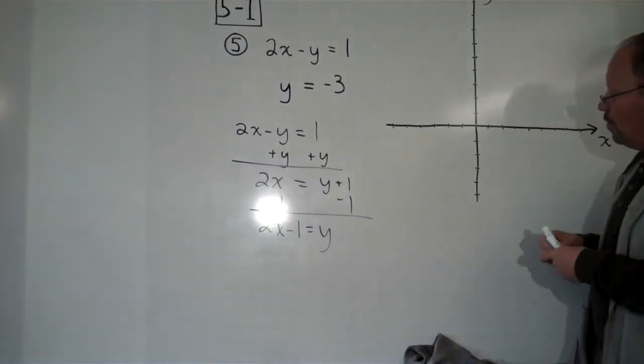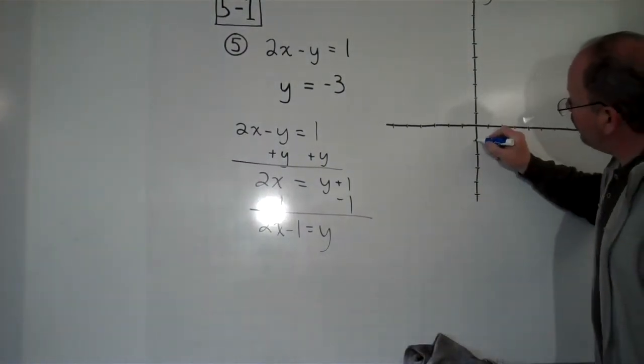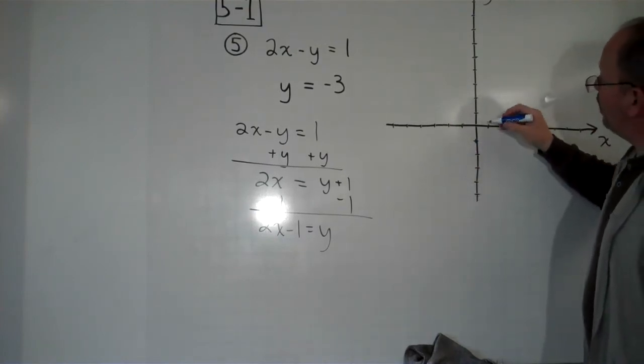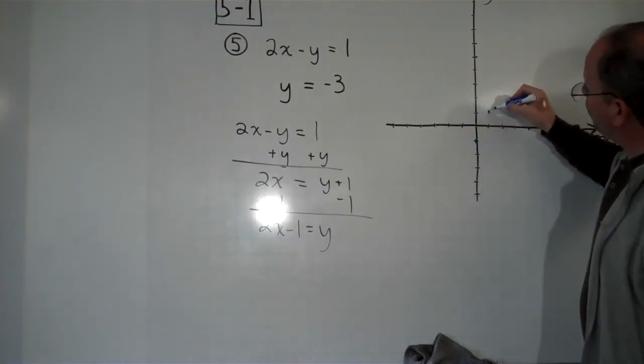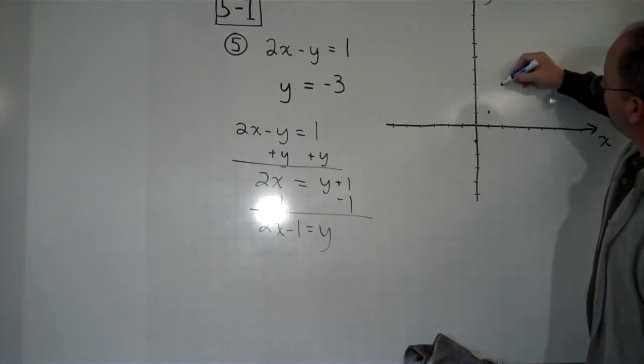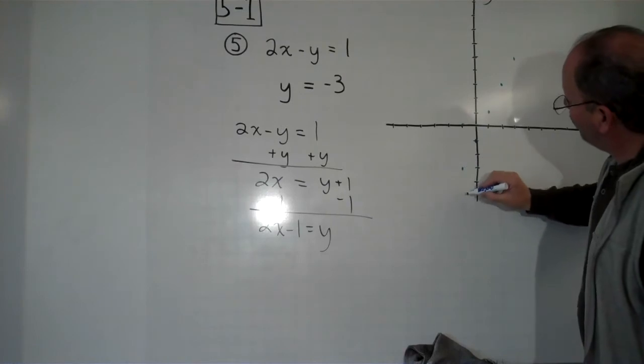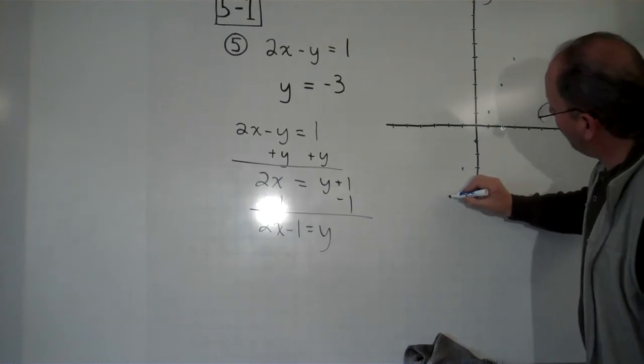So we can come over here to negative 1, our intercept, and then our slope is up 2 over 1, up 2 over 1, up 2 over 1. So we graph this line.